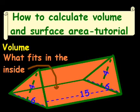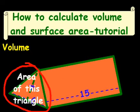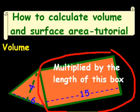Basically what we're going to do is take the area of this triangle right here and multiply that times the length of this box, and that will give us the total volume. So that's conceptually what we're trying to do there.